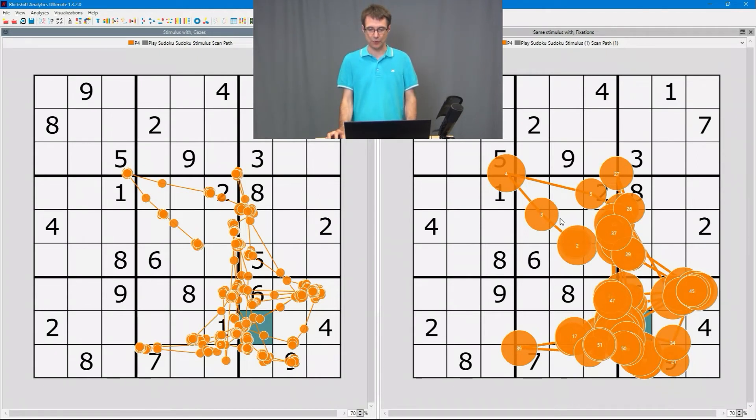And then the participant focused here the next position on the table. So the third fixation, the fourth fixation and so on. And by analyzing this scan path we get an idea how this participant played Sudoku.